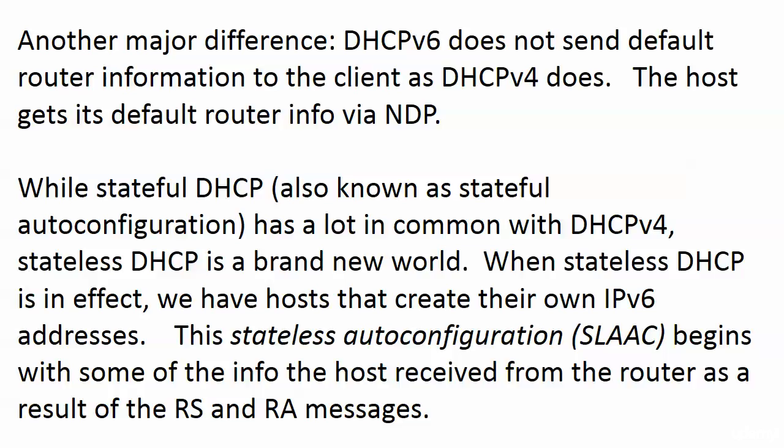A quick note from the department of picking nits: when we say DHCPv4 or DHCPv6, that is not referring to the actual version number of DHCP. This is the commonly accepted way to write DHCP for IP version 4 and DHCP for IP version 6. On your exam, if a DHCP version is not mentioned, they're talking about DHCP for IPv4.